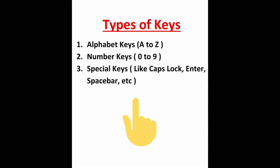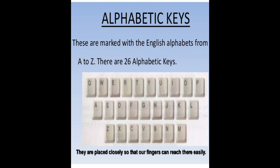There are mainly three types of keys on the keyboard: first is alphabet keys, second is number keys, and third is special keys. The first one is alphabet keys — there are 26 alphabet keys on the keyboard from A to Z, and these keys are used to type letters, poems, and more on the computer.